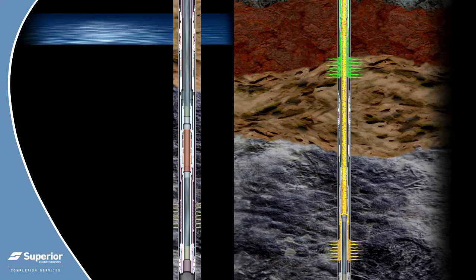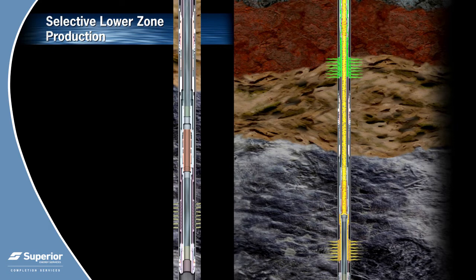The well is placed on production by releasing the pressure in the production tubing. The predetermined under-balanced condition not only assists in valve shifting but also ensures the hydrostatic on the formation is less than formation pressure.